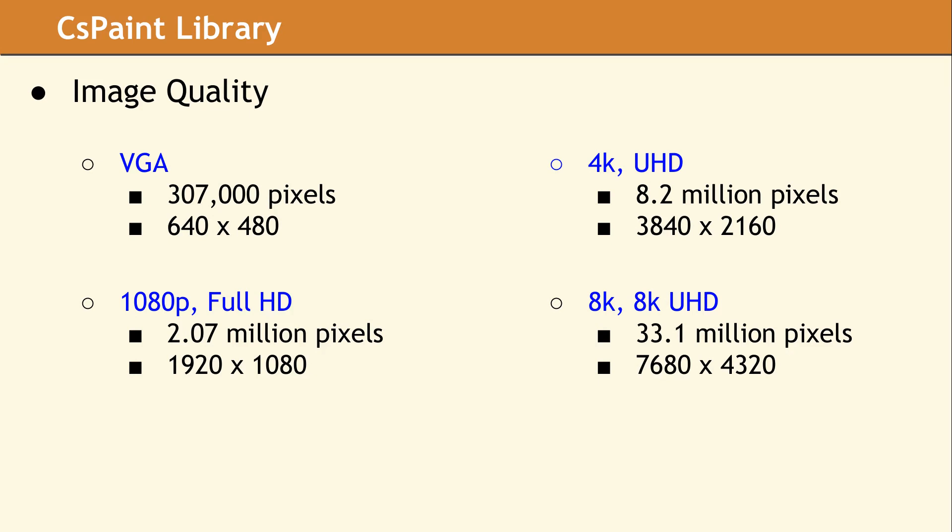4K monitors came out around 2014 and are becoming more common for desktop monitors and laptop computers. The 8K monitor is just starting to show up, with the current price of a 32-inch 8K monitor at around $4,000. As these prices drop, consumers will want to use better resolution displays, and your applications need to adapt. If you have a program running full screen on an 8K monitor and the screen needs to be refreshed, there are 33 million pixels which must be redrawn — roughly 100 times more work than drawing the whole screen on a VGA monitor.